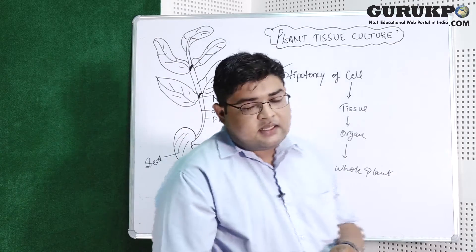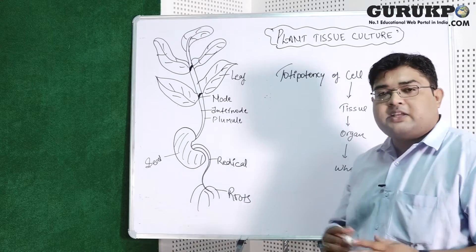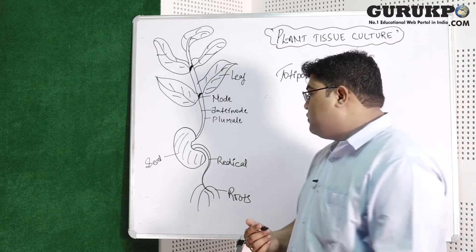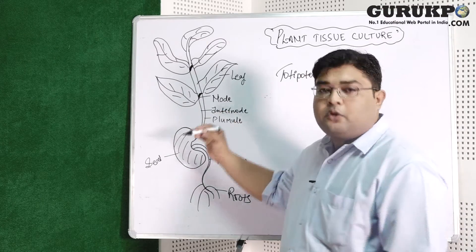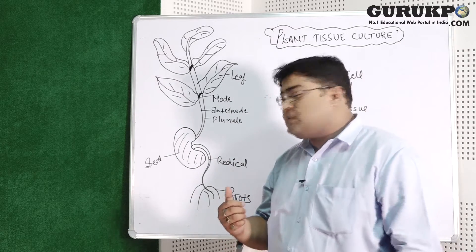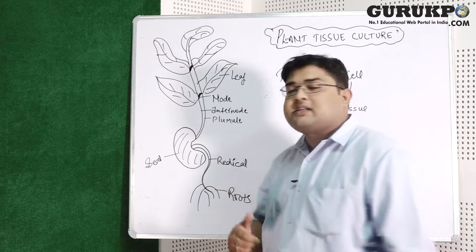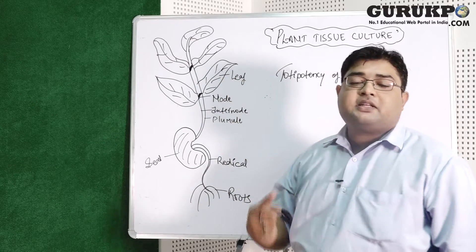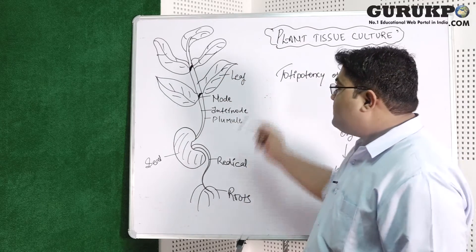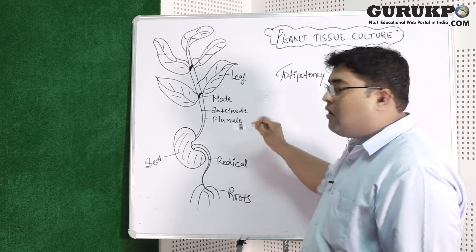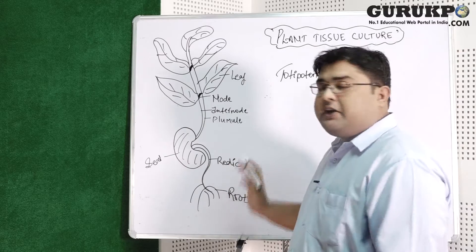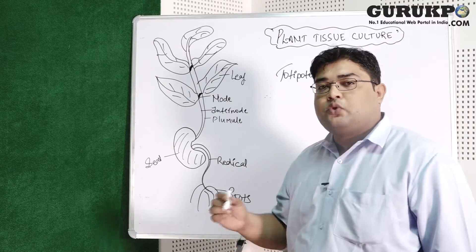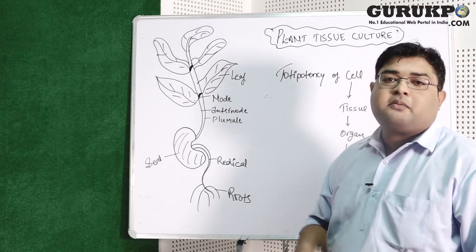Before discussing the purposes, let me explain how plants grow in the natural environment. From seeds, germination produces the radicle portion and the plumule portion. The radicle leads to root production, whereas the plumule generates internodes, nodes, leaves, and the shoot apical meristem. These portions individually possess totipotency and any one of them can be used as an explant to grow under in vitro conditions in plant tissue culture.